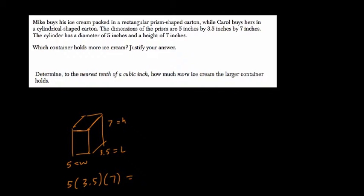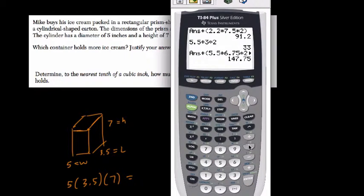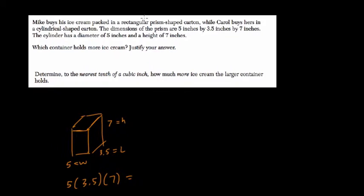Let's just figure out what that is. 5 times 3.5 times 7 is 122.5. So we have our volume. That's how many cubic inches this holds.